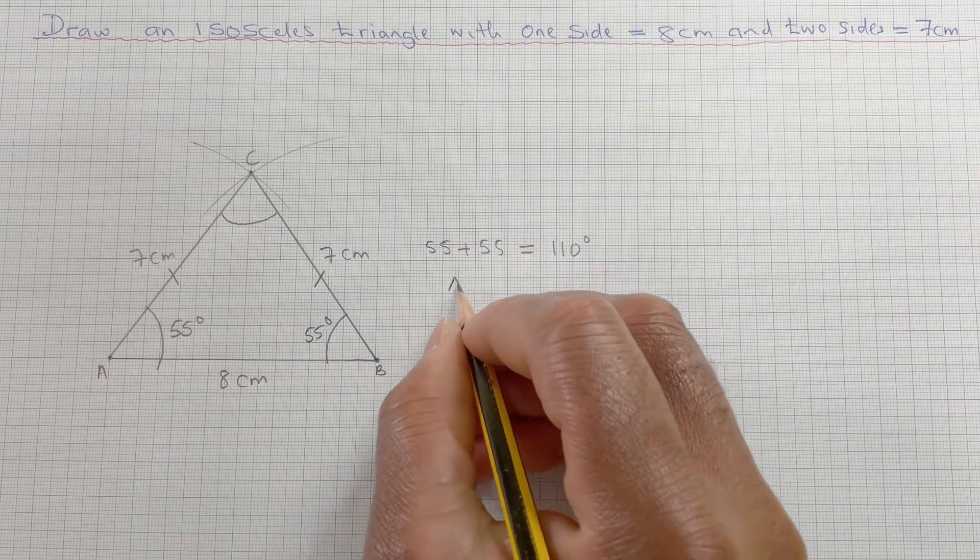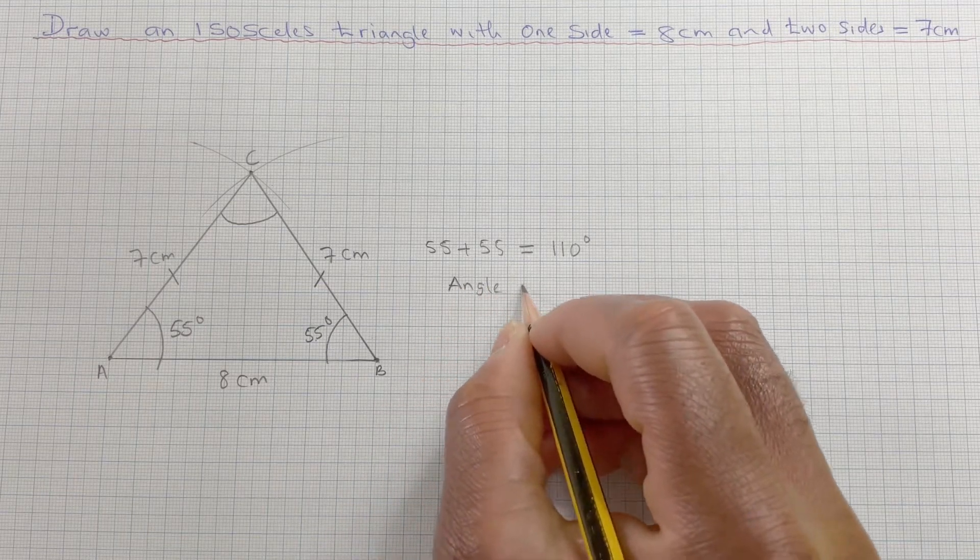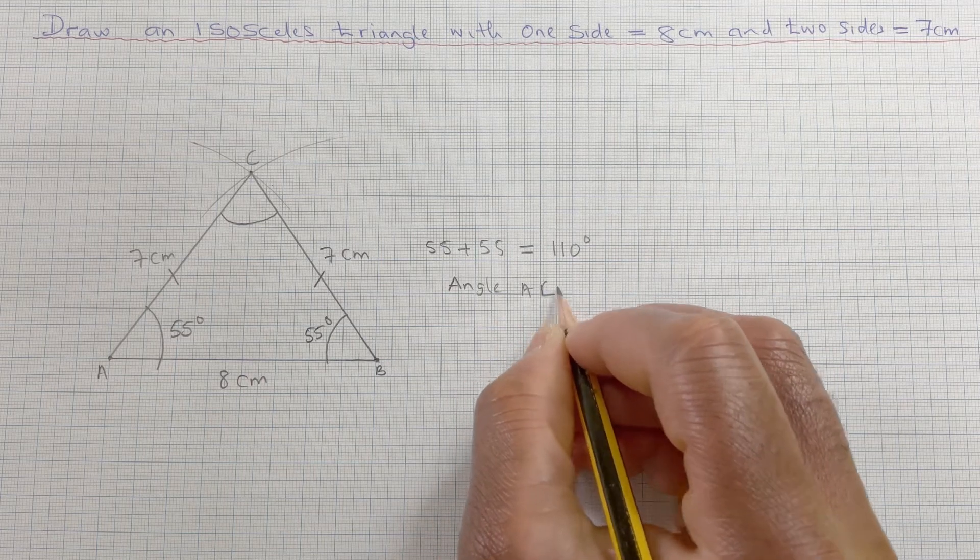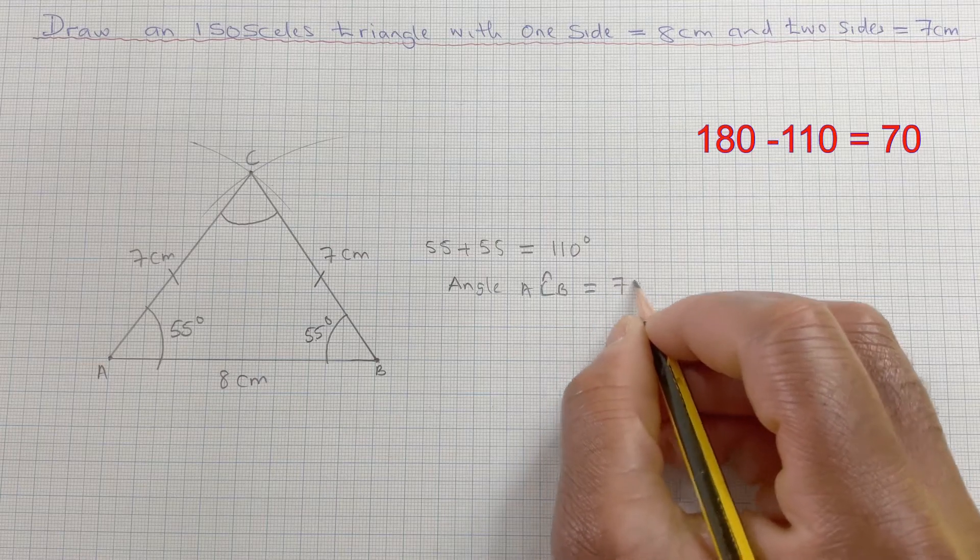So C, angle CAB, must equal to 70 degrees.